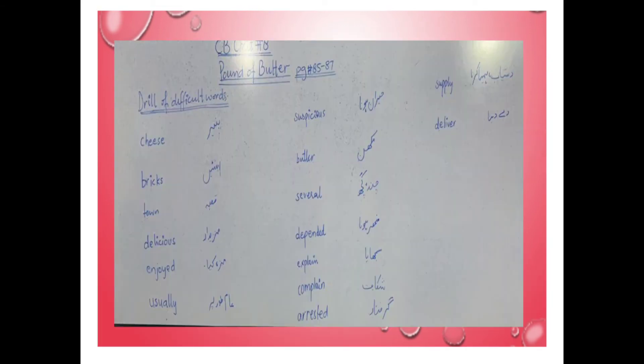Okay — cheese means paneer. How many of you like cheese burger and cheese omelette and cheese pizzas? I also like them. Bricks means 'eets' — town means kasba. Delicious means mazadar. Enjoyed means mazakia. Usually means 'aam tor per'.